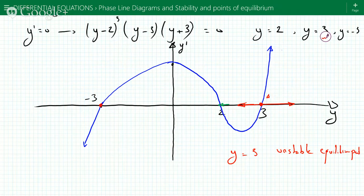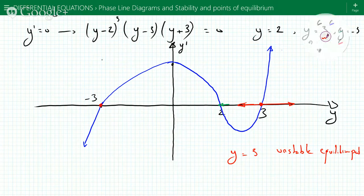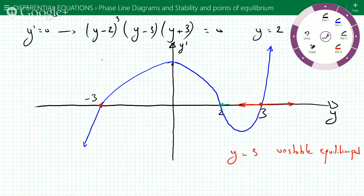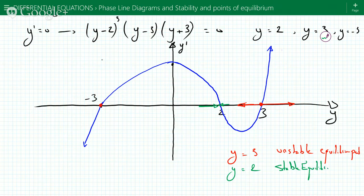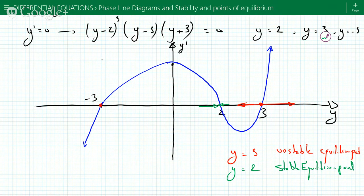Now the next one — y equals 2. If y is greater than 2, the slope is negative, so y is getting smaller and you're approaching 2. If y is less than 2, the slope is positive, so you're approaching 2. Therefore y equals 2 is a stable equilibrium point.